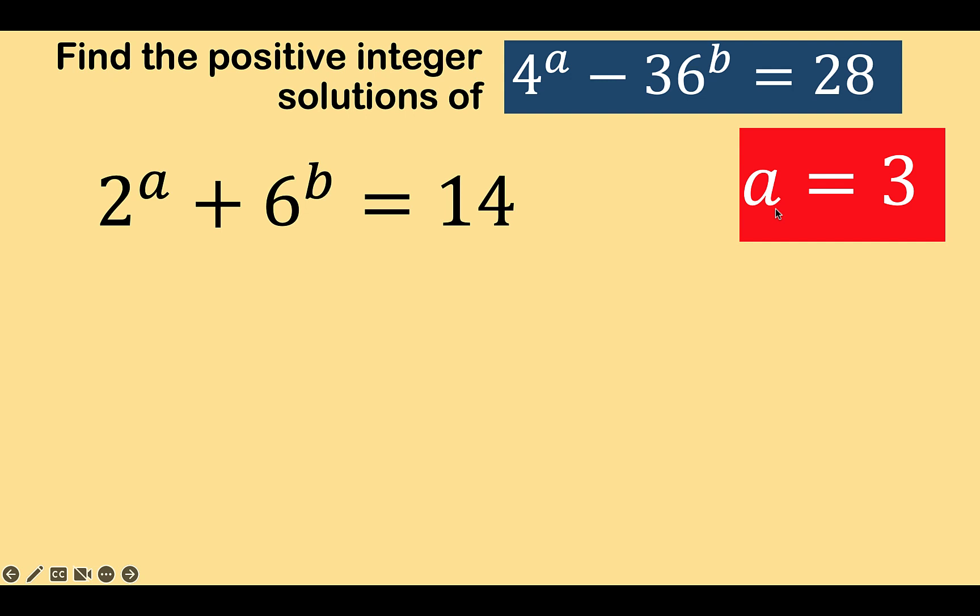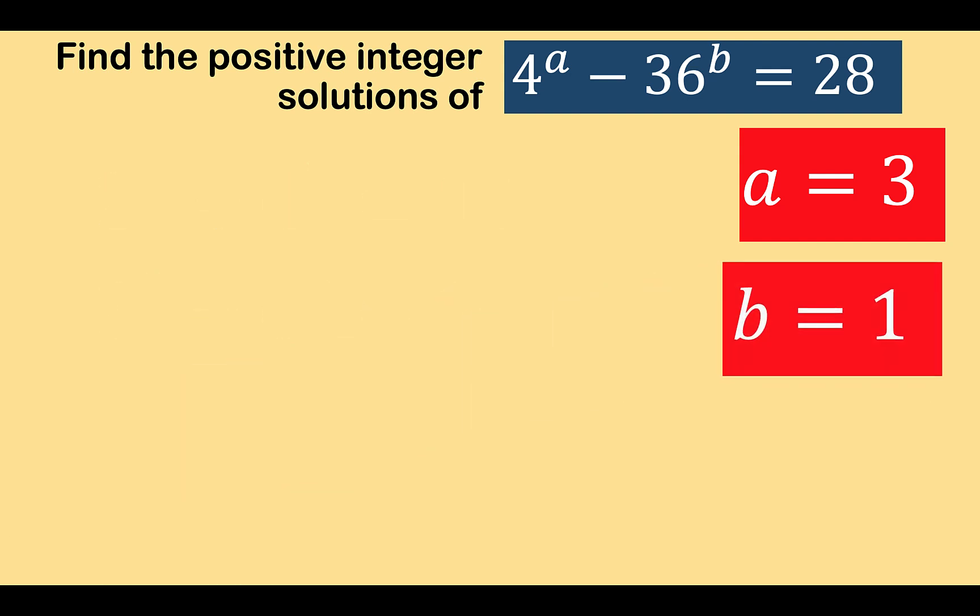Then substituting this result, a equals 3, to one of the equations we solved simultaneously, we now have 2 raised to 3. But 2 raised to the third is 8, and 14 minus 8 is 6. So we now have 6 raised to b equals 6. And finally, b is equal to 1.